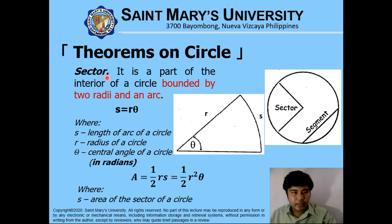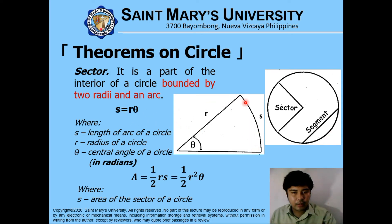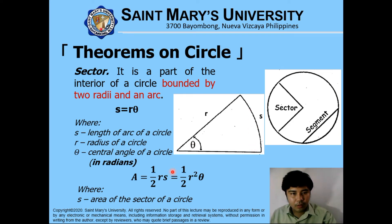A sector is a part of the interior of a circle bounded by two radii and an arc. In finding the arc length, S is equivalent to the radius of the circle multiplied by the central angle in radians. If the angle in the problem is in degrees, you need to convert it to radians first. The area of a sector is equivalent to one half R squared theta, or one half the radius multiplied by S.